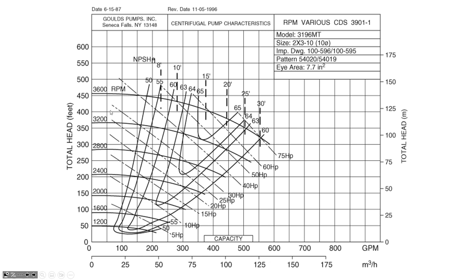For the same pump, performance varies depending on its rotational rate. At 3600, 3200, and 2800 RPM you get different curves. At 2800 RPM the pump generates about 280 feet of cutoff head, whereas at 3200 RPM the same pump generates about 365 feet of head. So rotational rate is one of the key factors affecting pump performance.